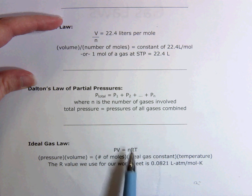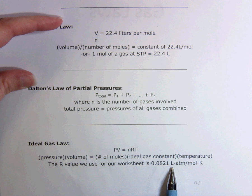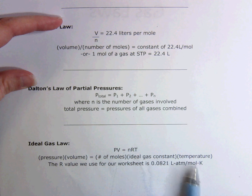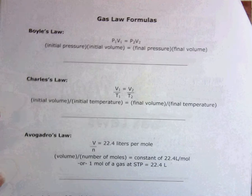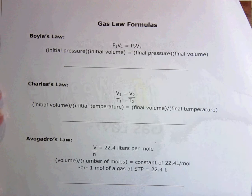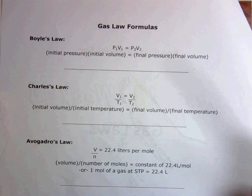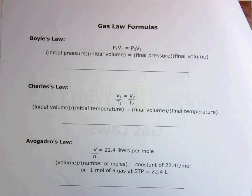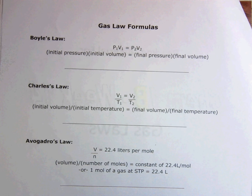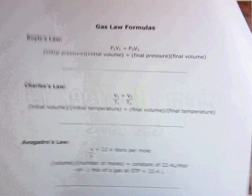We use 0.0821 for R as long as we are measuring our pressure in atmospheres, our volume in liters, number of moles, and our temperature in Kelvin. Our temperature being Kelvin is true for all of our gas laws — we really need to use Kelvin or they don't work properly. So make sure that you're always changing to Kelvin, and remember that means you have to add 273 to all of your Celsius temperatures.